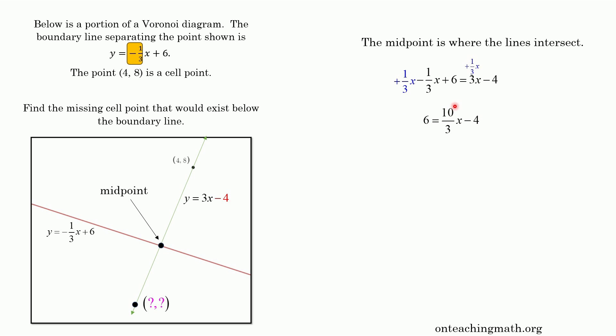So anyway, 6 equals 10 thirds x minus 4. I'm going to just go ahead and finish the inverse operations here. Add 4 to both sides. Multiply by the reciprocal. It looks like x is equal to 3.